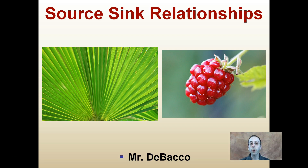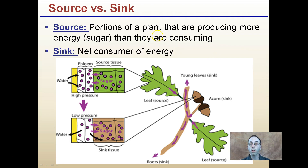This video is going to look at the source and sink relationship that plants have to go through. Source being mainly leaves, and the sink in this case being the developing blackberry, and how these interrelate when we look at plants. Defining source and sink: sources are portions of the plant that are producing more energy, particularly sugars, than they are consuming. Sinks are net consumers of energy.